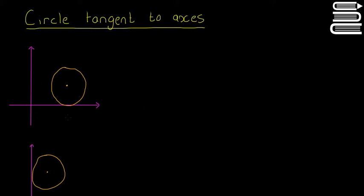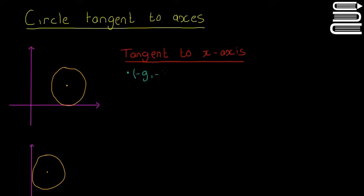The first case is when a circle is tangent to the x-axis. We know the centre point of a circle is given by (-g, -f), where the first value is the x-coordinate and the second is the y-coordinate. So the point directly under the centre point where the circle hits the x-axis is equal to -g on the x-axis.